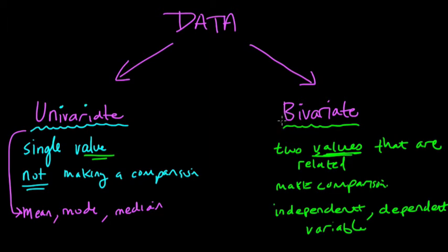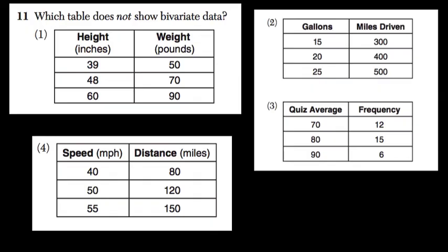Bivariate data looks at variables that are related and that affect each other. So actually, this question gives us some good samples here to look at. So let me clear this off.